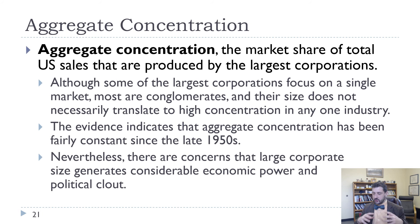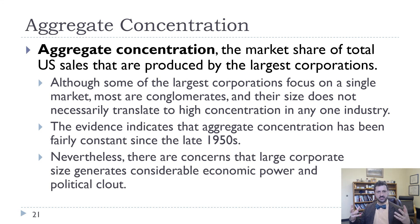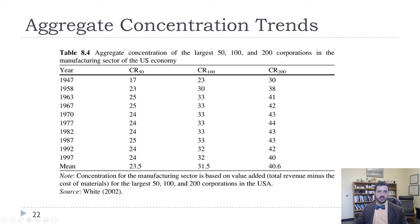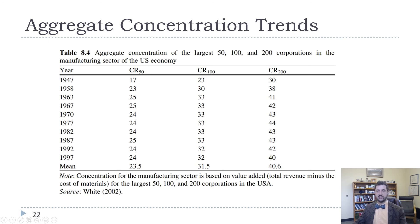We can also think about aggregate concentration — the market share of total U.S. sales produced by the largest corporations. There's a feeling that firms are getting bigger and bigger, but interestingly, aggregate concentration has actually not increased by that much. Looking at total sales of the top 50, 100, or 200 manufacturing firms, they've stayed fairly constant — in the mid-20s for CR50, the low 30s for CR100, and the low 40s for CR200. One major development since 1997 has been the movement of manufacturing away from the United States toward places like China, which is also a significant factor.